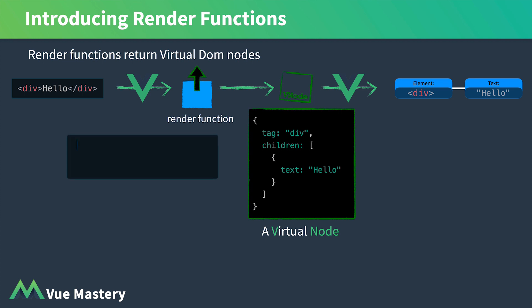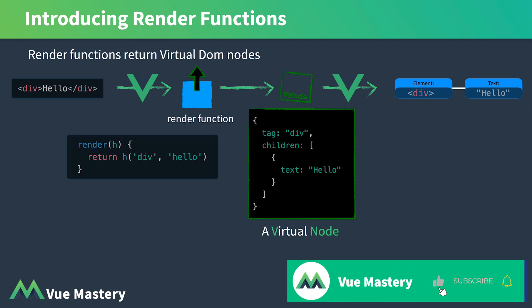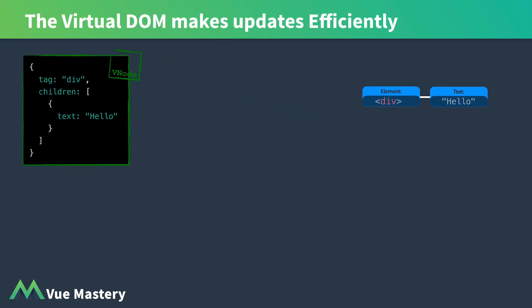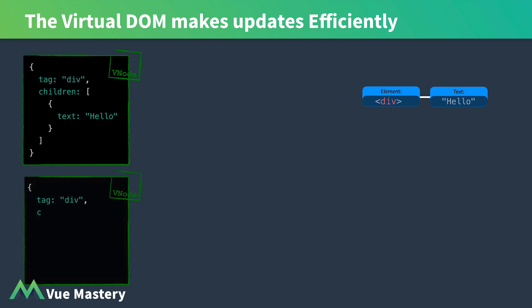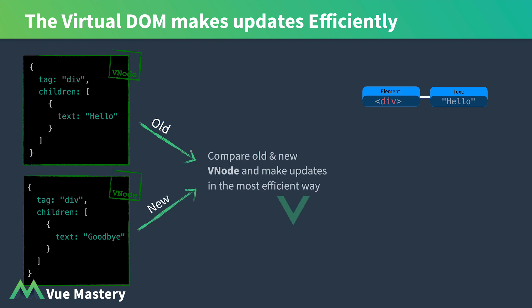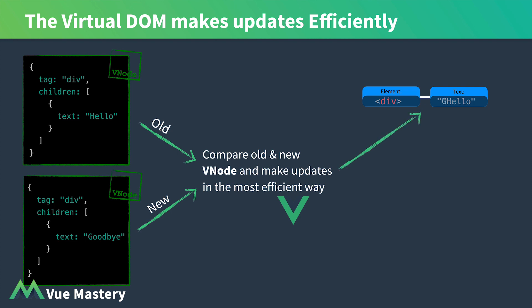Render functions can look something like this. When a component changes, the render function gets rerun, which creates another virtual node. We then send the old VNode and the new VNode into Vue to compare the two and make updates in the most efficient way onto our web page.